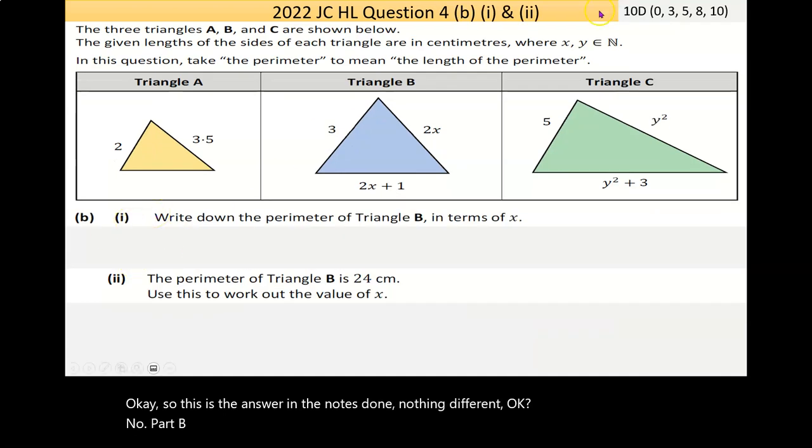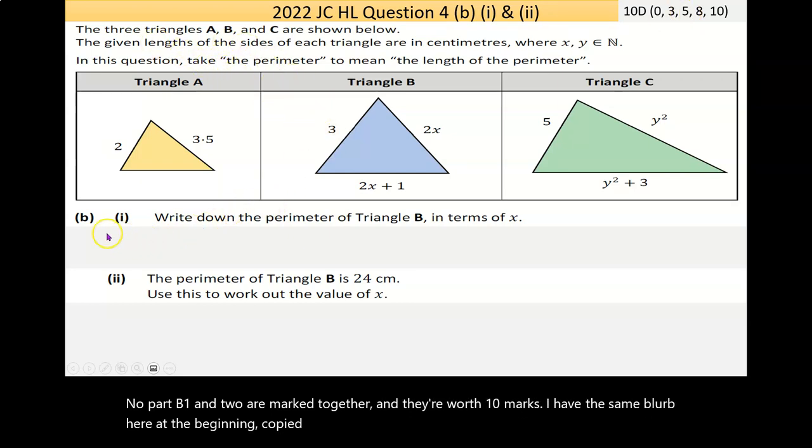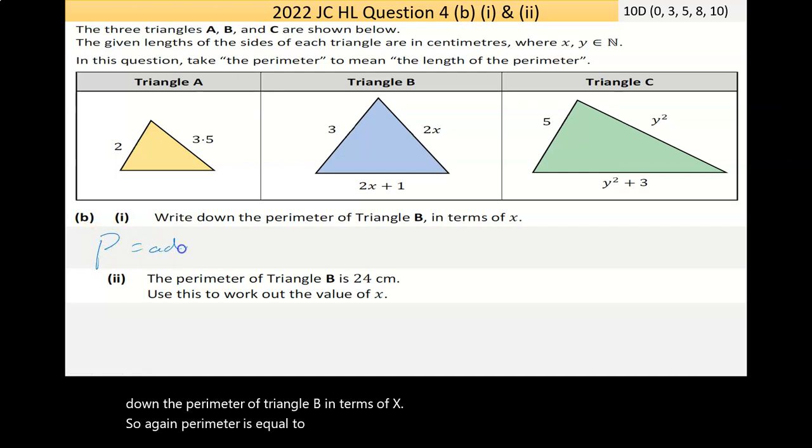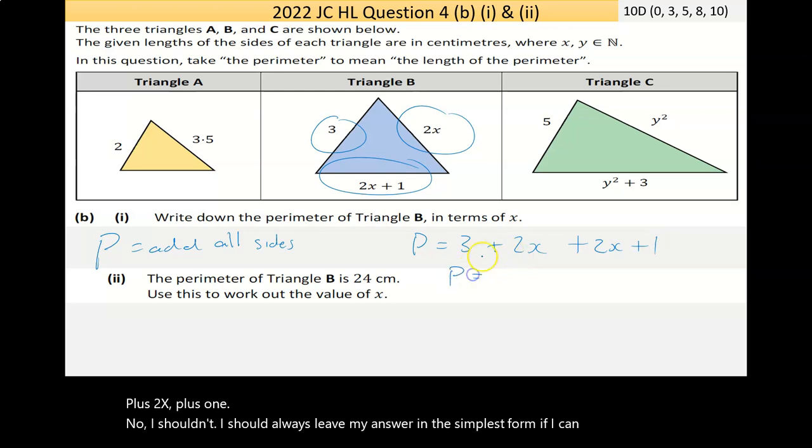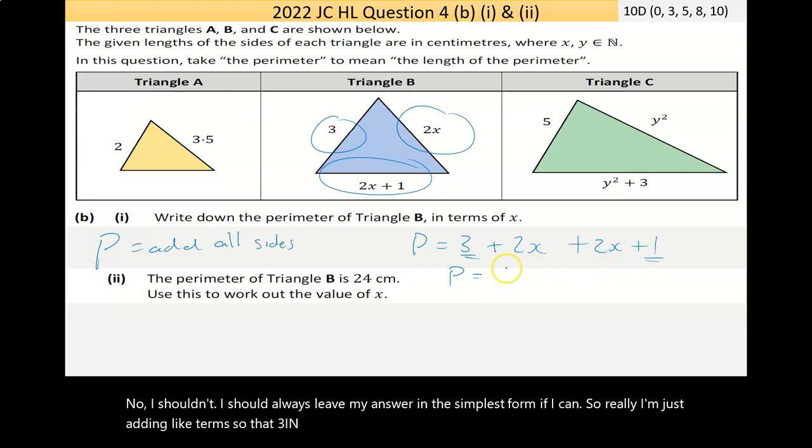Now part B, 1 and 2 are marked together and they're worth 10 marks. Part 1 says write down the perimeter of triangle B in terms of X. So again, perimeter is equal to add all sides. So the perimeter is equal to 3 plus 2X plus 2X plus 1. I should leave my answer in simplest form. So the 3 and the 1 combine to give 4 and the 2X and the 2X add to give 4X.